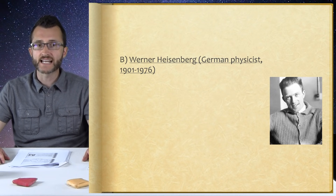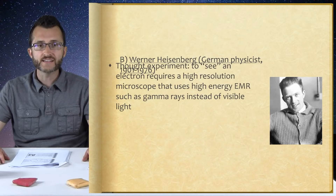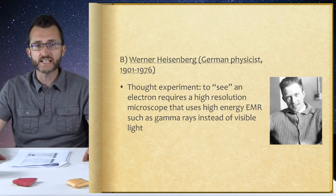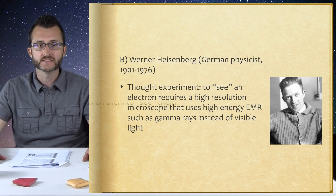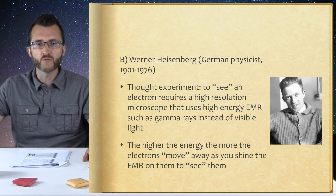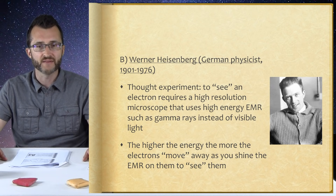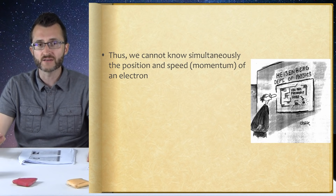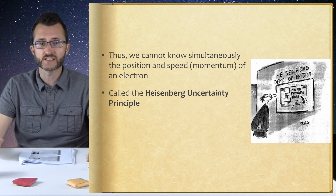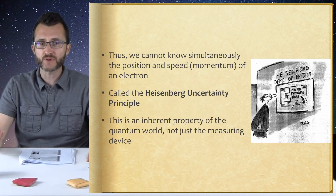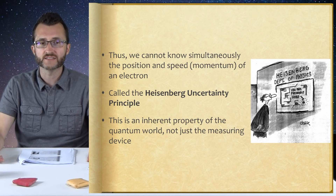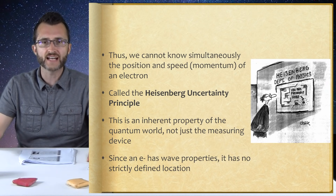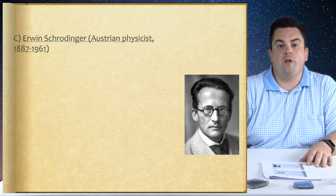Werner Heisenberg, German physicist, 1901–1976. Heisenberg did a thought experiment: to see an electron requires a high-resolution microscope using high-energy EMR, such as gamma rays, instead of visible light. The higher the energy, the more the electrons move away as you shine the EMR on them. Thus, we cannot simultaneously know the position and speed or momentum of an electron. This is called the Heisenberg uncertainty principle. This is an inherent property of the quantum world, not just the measuring device. Since an electron has wave properties, it has no strictly defined location — we don't know exactly where it is.